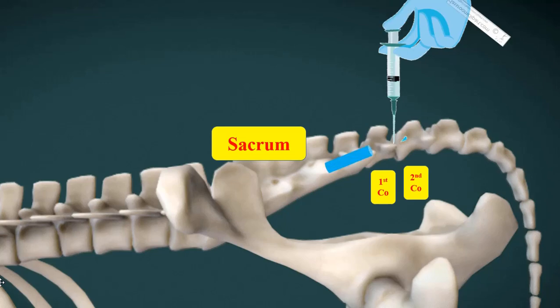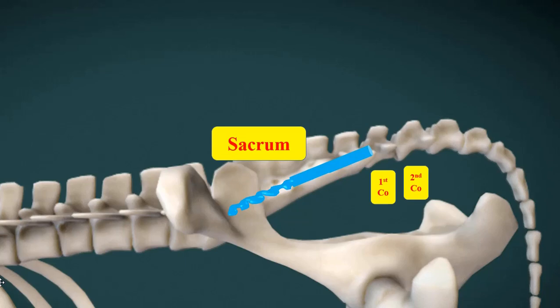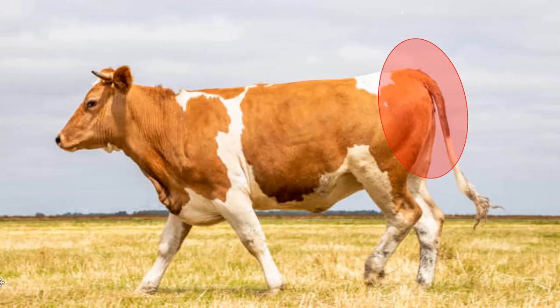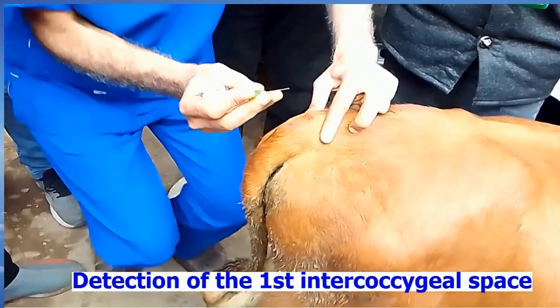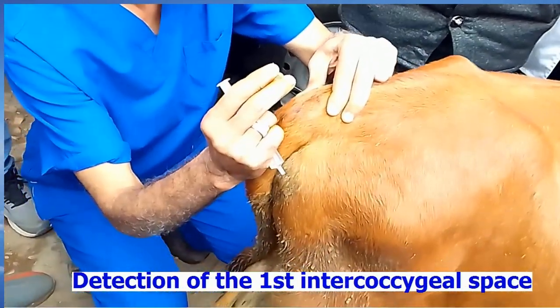A dose of 1 milliliter of a 2% lidocaine per 100 kilograms body weight, or 0.2 to 0.5 milligrams per kilogram, is usually adequate to produce posterior epidural analgesia. The drug spreads forward in the sacral cavity and affects the terminal nerves of the spinal cord, called the cauda equina, inducing analgesia of the tail, anus, vulva, and perineal region. Increasing the dose up to 100 to 150 milliliters for a 500-kilogram cow allows much more forward spreading, causing disturbance of motor function of the hind limbs and a greater analgesic area extending to the flanks and umbilicus.